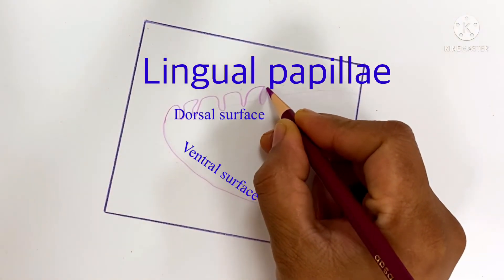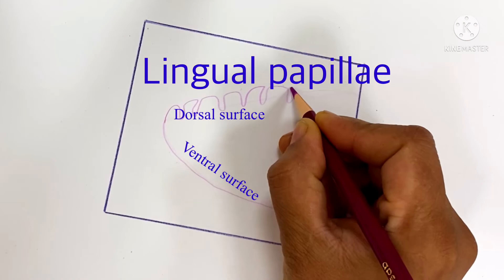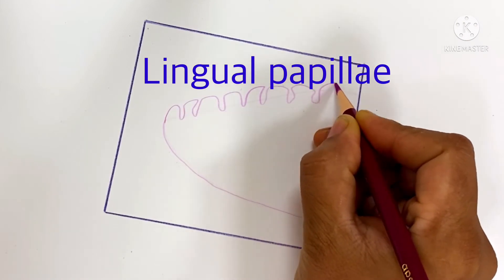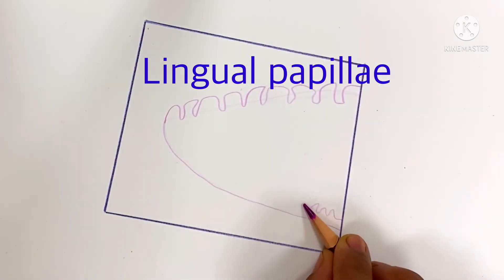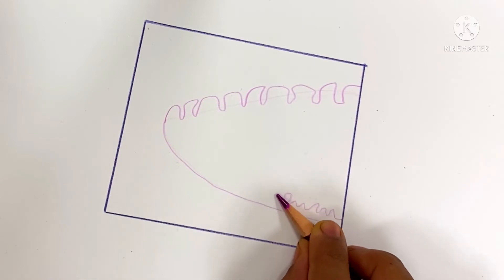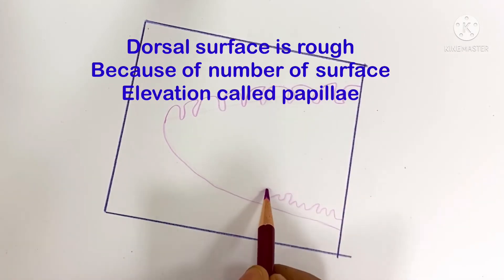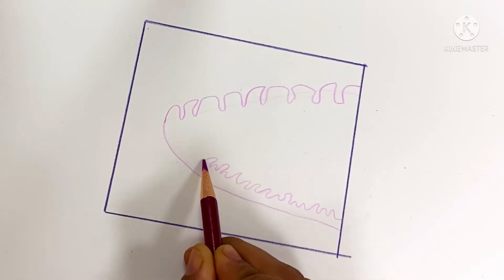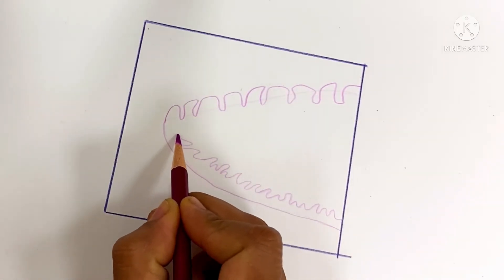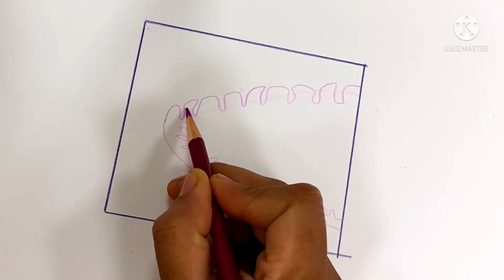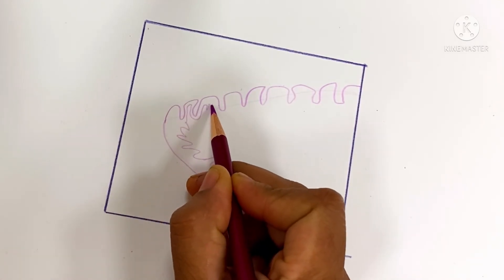On the dorsal surface, there are irregular elevations. The dorsal surface is rough. The tongue is a mucomuscular organ - muscle covered by a mucous membrane.